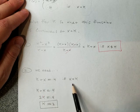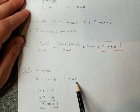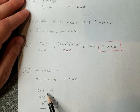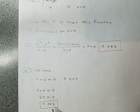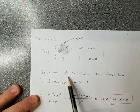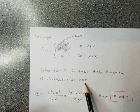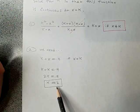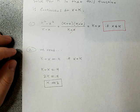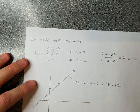If I let x equal k, the equation becomes k plus k equals 4, which gives 2k equals 4, and dividing gives k equals 2. That's our answer. For this function to be continuous at x equals k, k must equal 2.